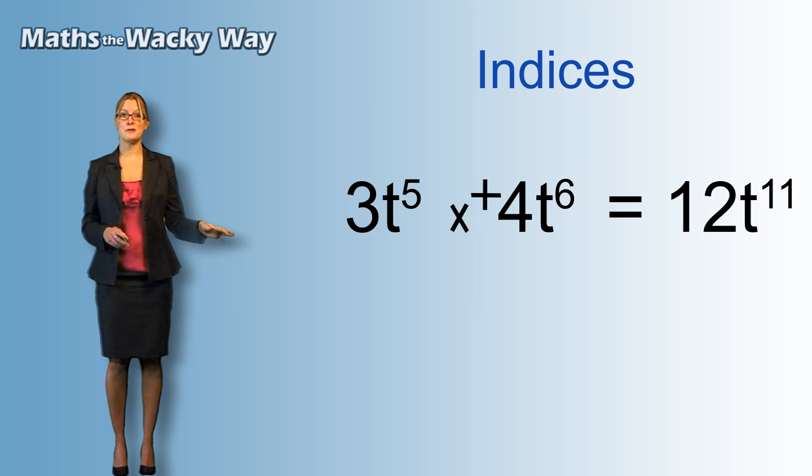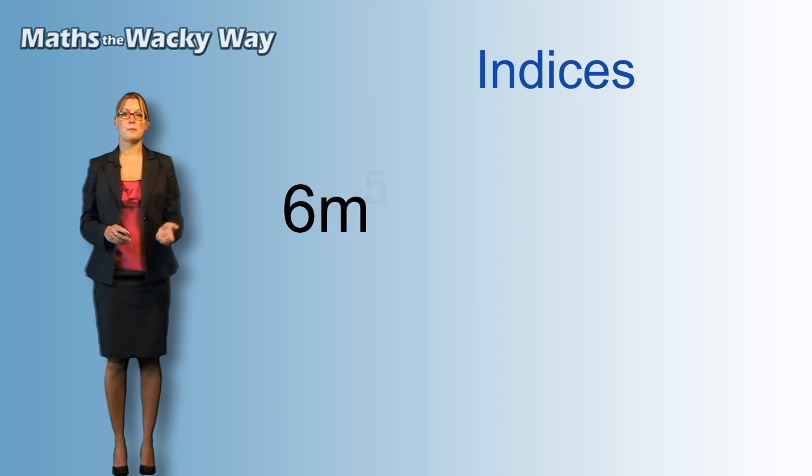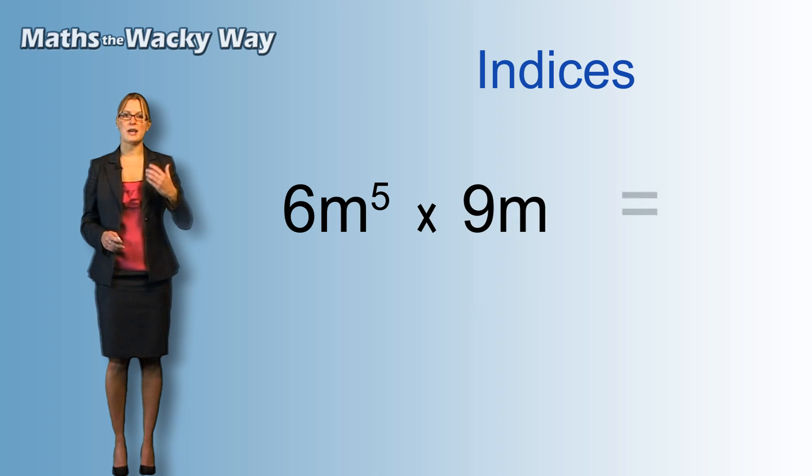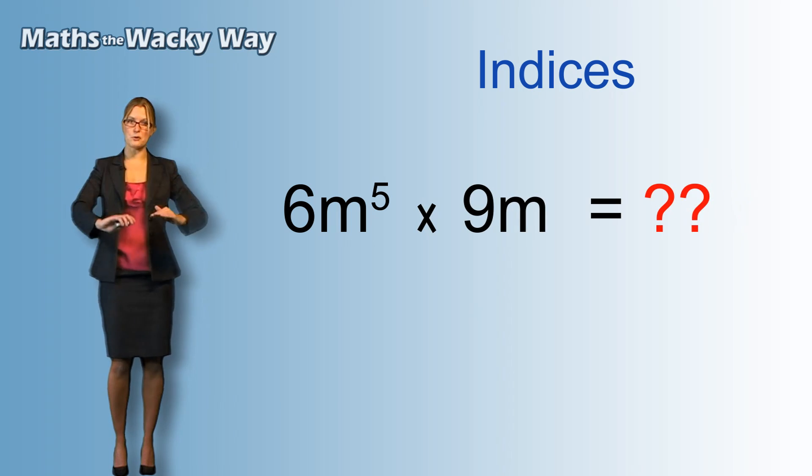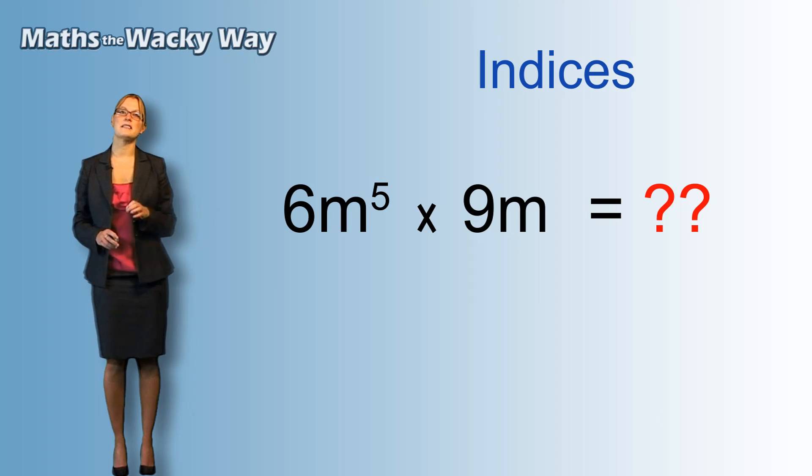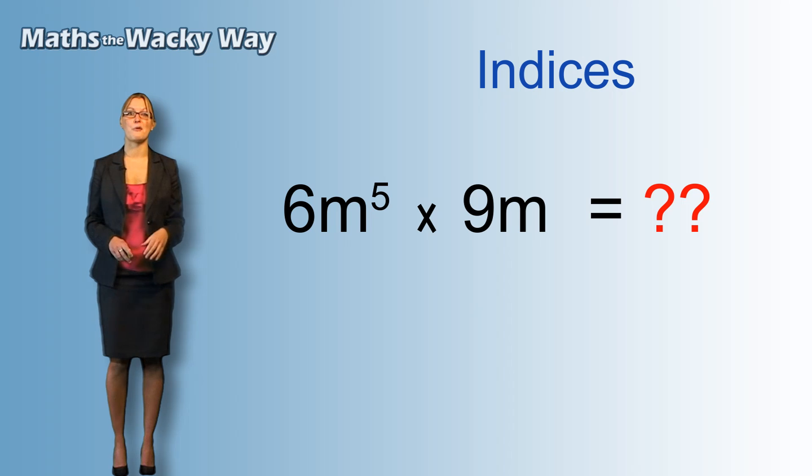Let's just try one more of those. So the next example we have is 6m to the power of 5 times 9m. Now we've got the same issue here, in that we've got two levels, but also m is on its own. And as we've seen already, an m on its own is m to the power of 1. So 6 times 9 is 54.